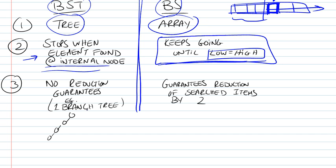In the case of a binary search tree, there's no reduction guarantees. If it's a one long branch tree, then you're just going to keep on looking for your element going on.